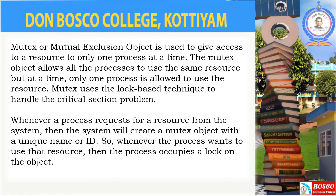Mutex lock uses the lock-based technique to handle the critical section problem. Whenever a process requests a resource from the system, the system will create a mutex object, and that mutex object will have a unique name or ID. By using that unique name or ID, whenever the process wants to use that resource, the process occupies a lock on the object. This is how a mutex lock works.